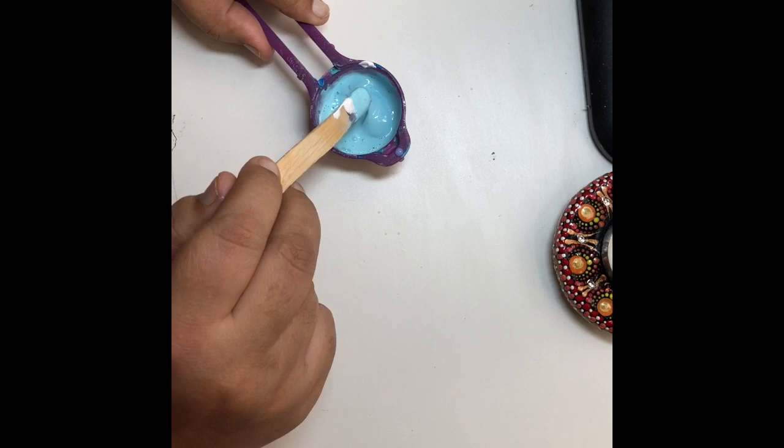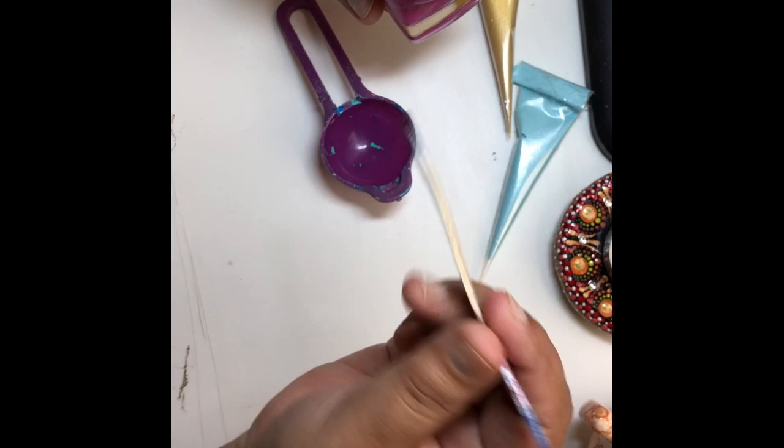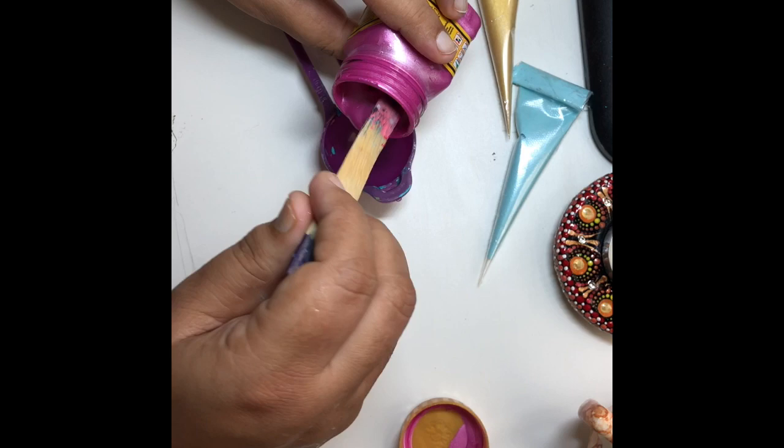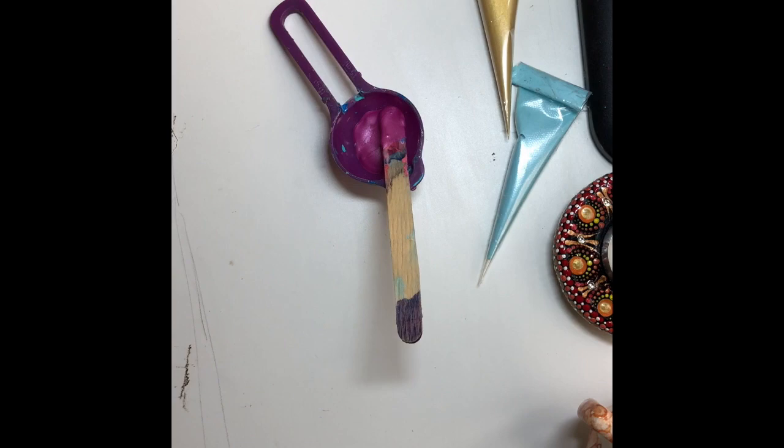Next category is thin and runny paints. In India we get Fevicryl and Flash paints - they are too thin for filling in the cones. So for that you have to make it a little bit thick for putting it in the cone. Just put this thin paint in a spoon or palette and add some baby powder to it.